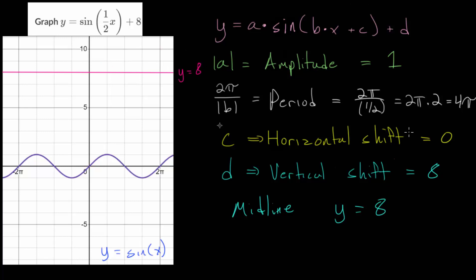Now the next step is to use our information about the amplitude. And the amplitude didn't change compared to our parent function. So when we shift this up, this point going through the origin will not change. It will still go through the midline. So there will be a point right there. And we know our amplitude didn't change. So this is going to oscillate between a y value of 9 and a y value of 7.